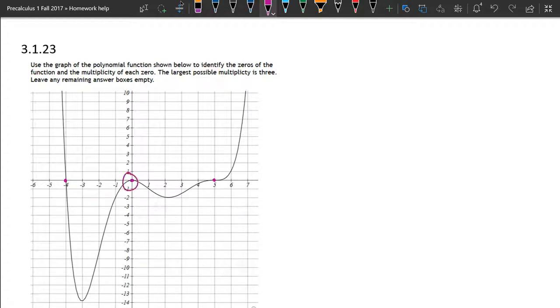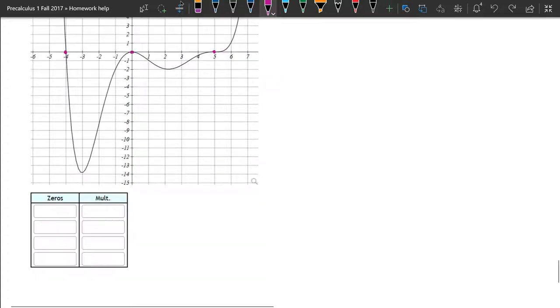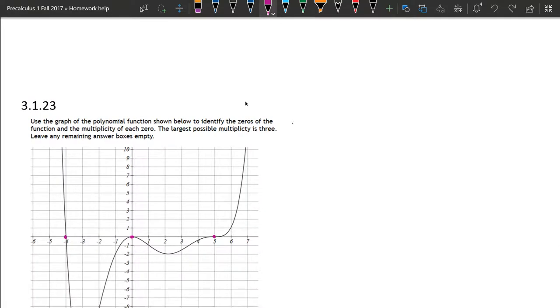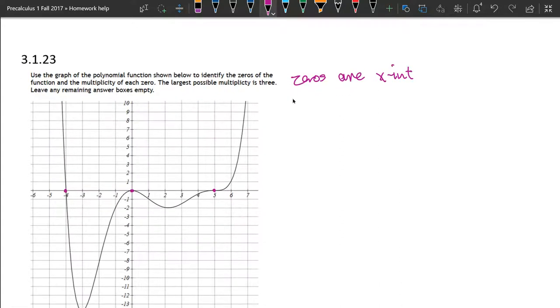Now, this is both an x and a y-intercept. Zeros are x-intercepts, so make sure you're looking for x-intercepts, not y-intercepts. This happens to be a y-intercept also, and that's okay, but if your y-intercept was up here, it would not also be an x-intercept. So we have three x-intercepts.